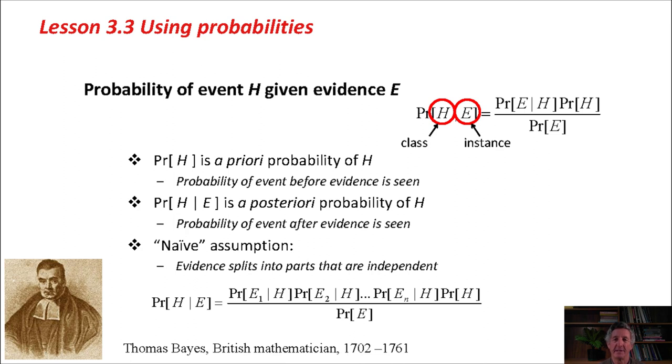What makes this method naive? The naive assumption is, I've said it before, the evidence splits into parts that are statistically independent. The parts of the evidence, in our case, are the four different attribute values in the weather data.